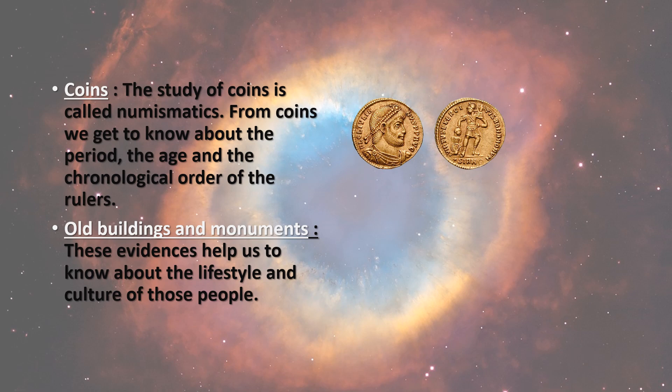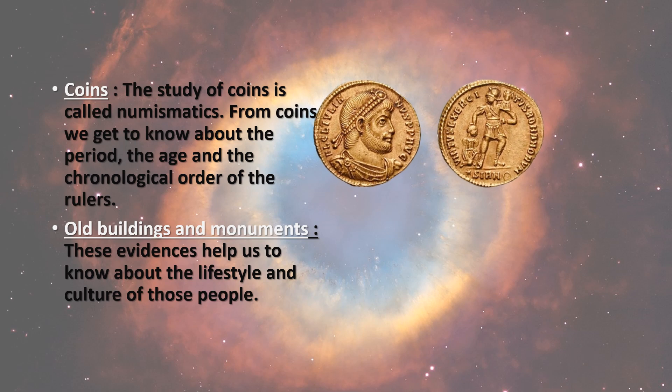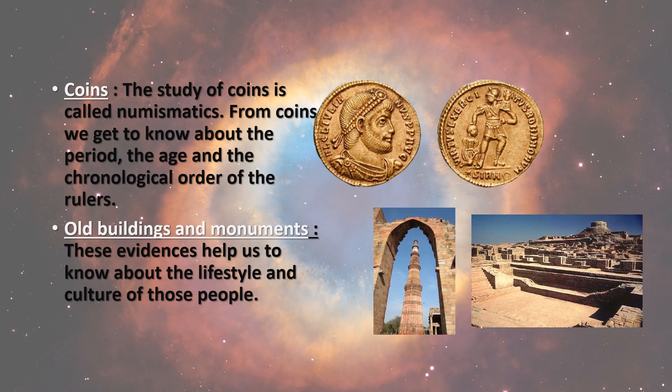If you look at these pictures of coins, you will see there are images and alphabets inscribed on the coins. These sources help us to know about the age or about the ruler ruling at that time. The study of coins is called numismatics. Similarly, old buildings and monuments help us to know about the lifestyle and culture of those people.